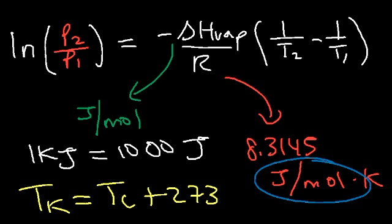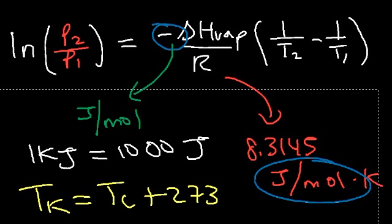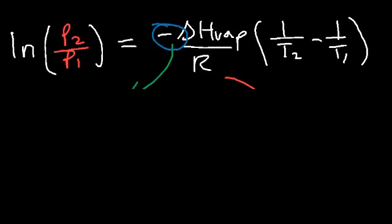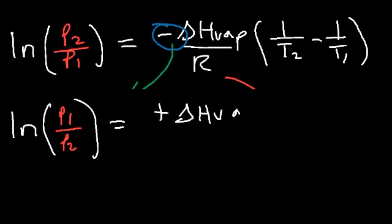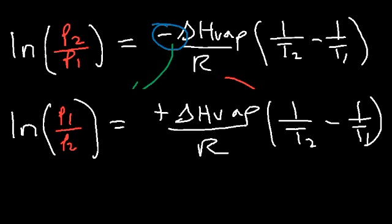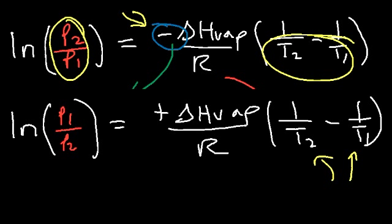That's the first form of the equation. Sometimes you'll see the negative sign, and other times you won't. You might see it written as ln(P1/P2) equal to positive delta H of vaporization over R times 1 over T2 minus 1 over T1. If you flip P2 and P1, you add a negative sign that cancels, or if you reverse T2 and T1, a new negative sign is introduced.